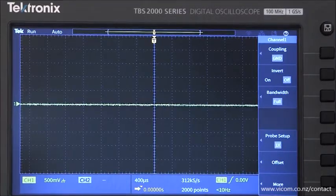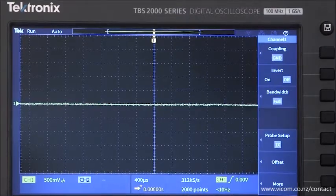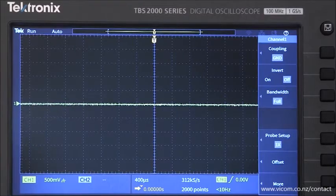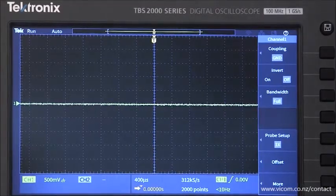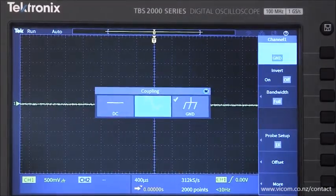Ground coupling disconnects the channel from the input signal and connects it to the zero volt reference to show the measurement ground level. For the rest of this video, we'll be going back to DC.